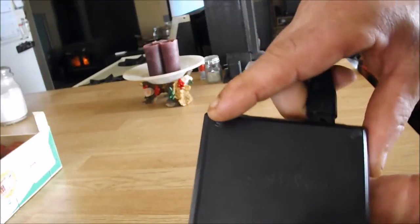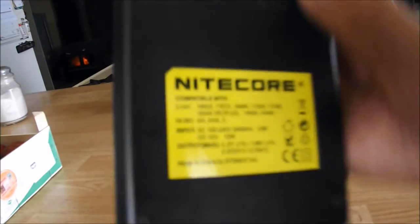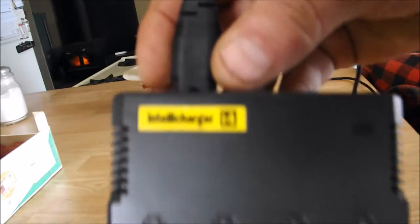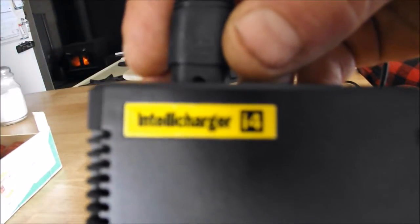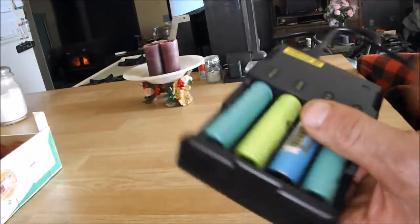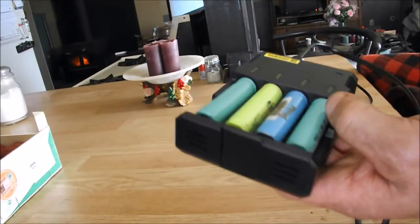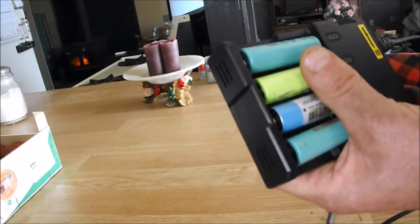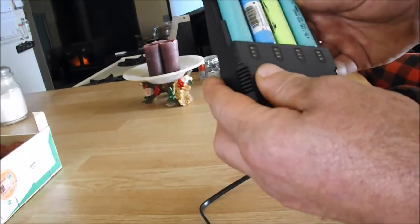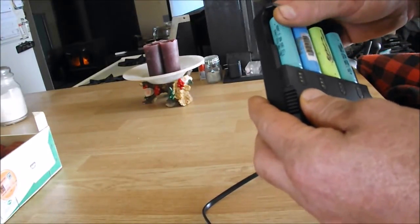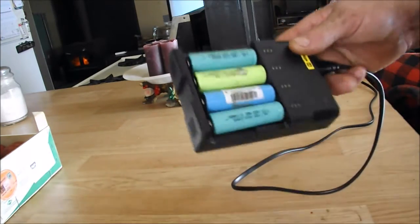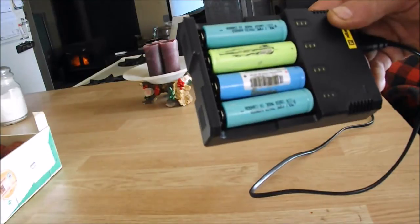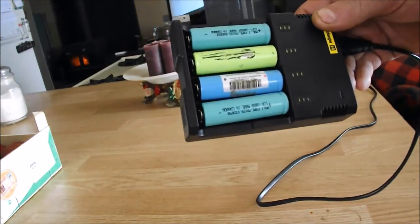You can read the name there what it's called. So double A's, triple A's, and these lithium-ion cells, the 18650. Well, thank you for watching everybody. Don't forget to subscribe and comment and check mark up or down. Many more videos to come.